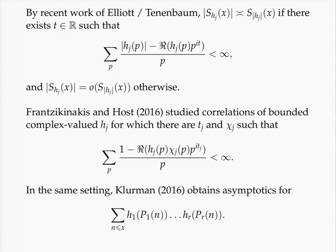So there is a bit more information you can deduce from a condition where you compare with the one function, which is much easier to understand than the absolute value. Nevertheless, this is a result that is not contained in my result at all — it is very different. Under the same pretentiousness condition, Klurman recently was able to analyze correlations of functions h_i, but not along a system of linear forms, but along a system of polynomials in one variable.